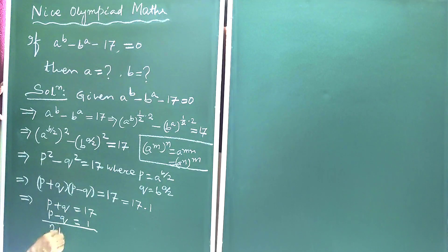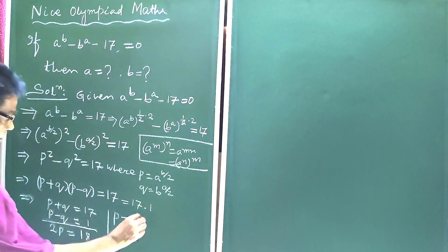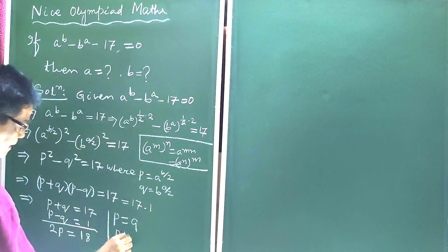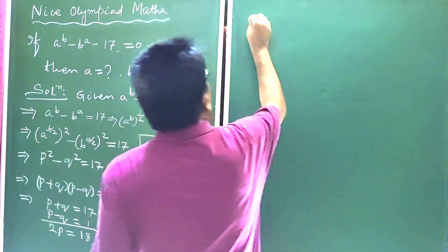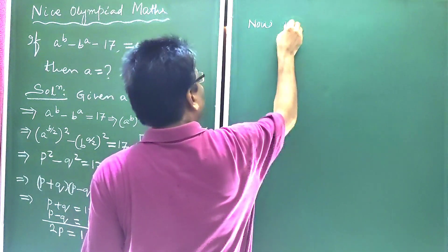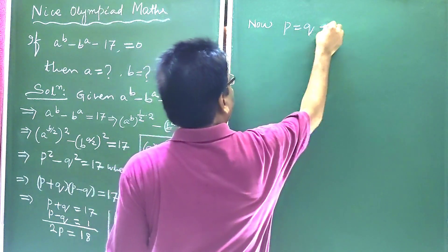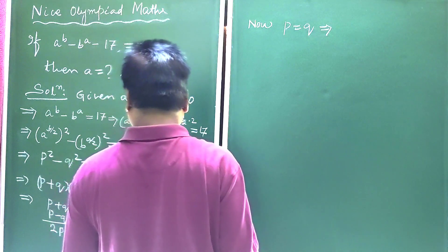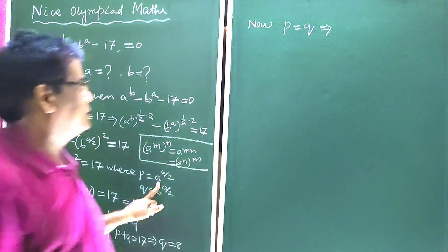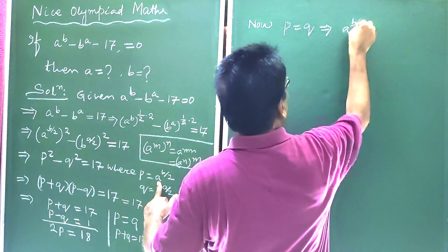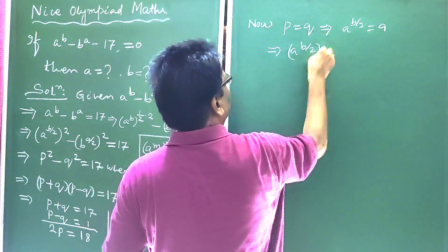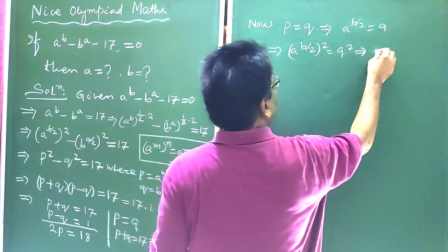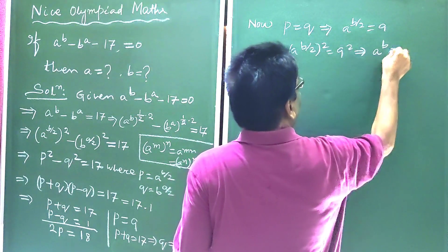Adding: 2p is equal to 18, which implies p is equal to 9. Now p plus q equals 17, so q is equal to 8. Now p equals 9 means a to the power b by 2 is equal to 9. Squaring both sides: a to the power b by 2, whole squared, equals 9 squared, so a to the power b is equal to 81.